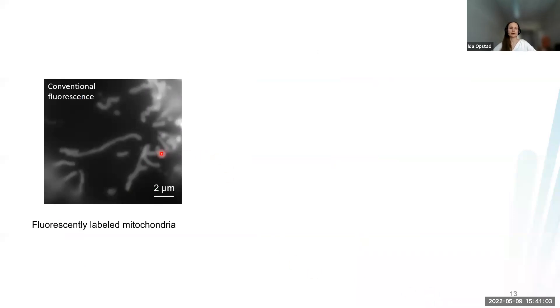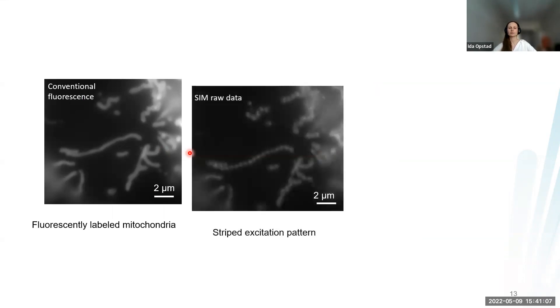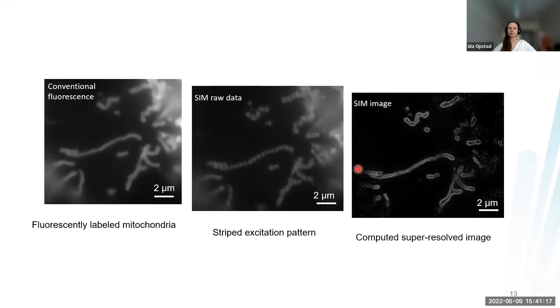This is how a conventional fluorescence image might look like. Then if we illuminate it with a stripy pattern, mitochondria would look like this. When we acquire many of these and reconstruct the image, we can get a super resolved SIM image. We can see that the outer mitochondria membrane is labeled, something which was invisible in the conventional image.